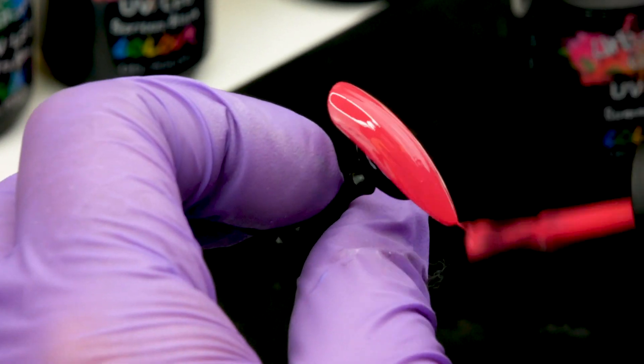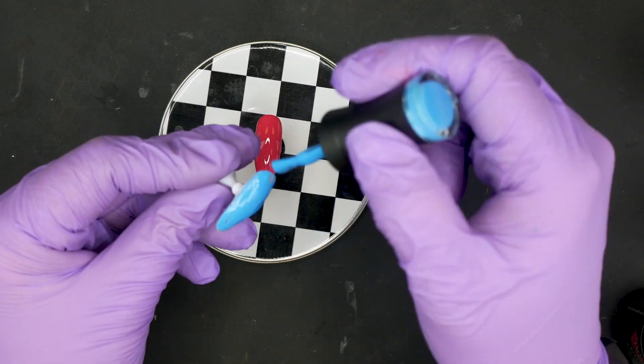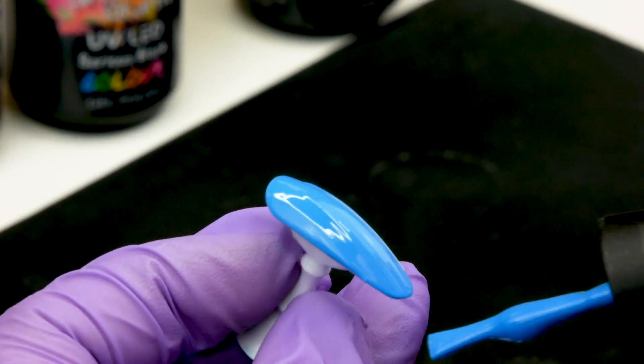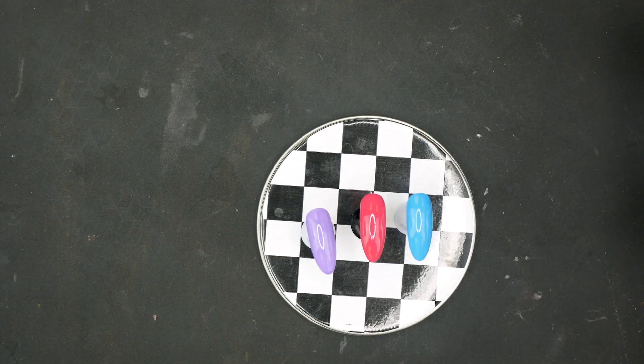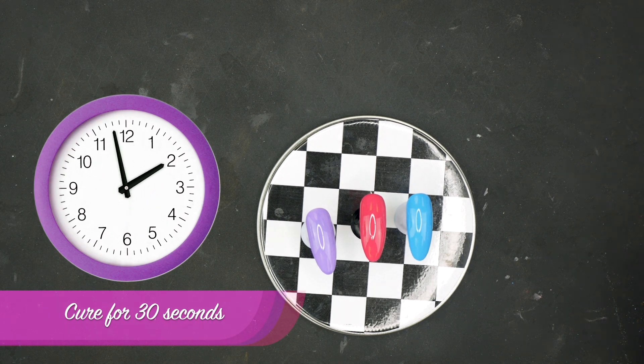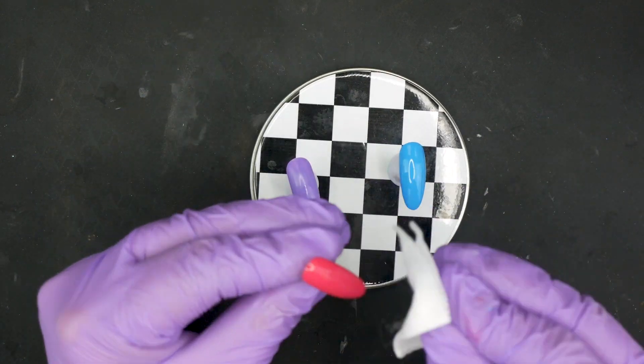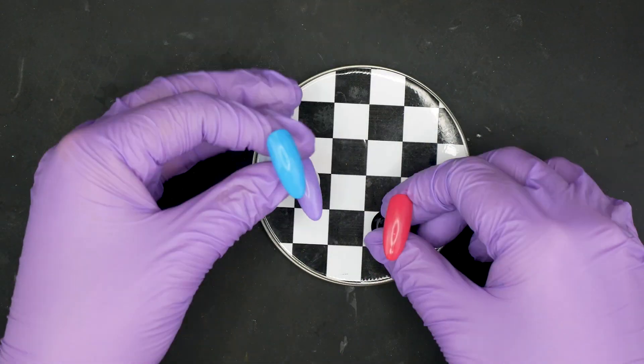I want these nice and bright. I'm going to put these in the lamp for 30 seconds to cure. When they come out, give them a second coat and pop them back in for another 30 seconds. And then when they come out, we'll wipe over with some Gel Residue Wipe Off Solution and a lint-free wipe.